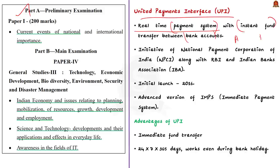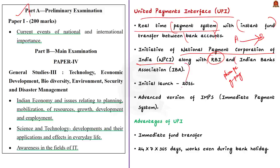Such transfer of funds is done through mobile applications like PhonePe, GPay, AmazonPay and even BHIM. UPI is an initiative taken by the National Payments Corporation of India (NPCI) along with the Reserve Bank of India and the Indian Banks Association, and this initiative was launched in 2016. UPI is considered an advanced version of IMPS, that is Immediate Payment System, which we use while using internet banking. IMPS is also an initiative of the NPCI.